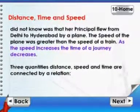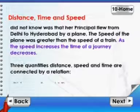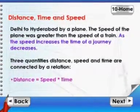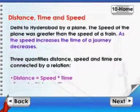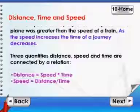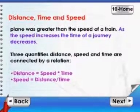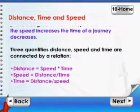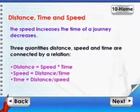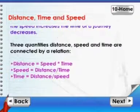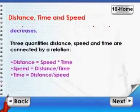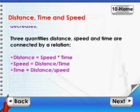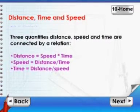Three quantities — distance, speed and time — are connected by a relation. Distance is equal to speed into time. Speed is equal to distance by time. Time is equal to distance by speed.